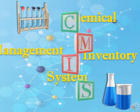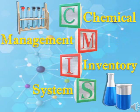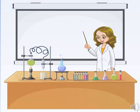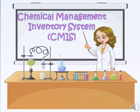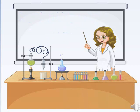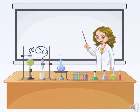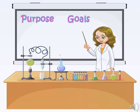Chemical Management Inventory System, or CMIS, is one of the online training resources that gives us information on how to manage chemical inventory in an institution. This video shares an overview of the Chemical Management Inventory System, including the purpose, goals, and limitations of the inventory software.